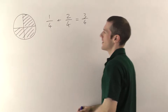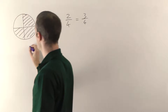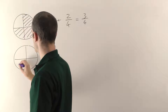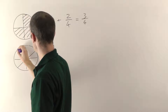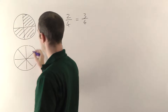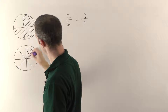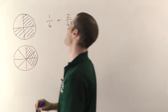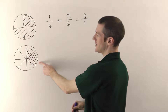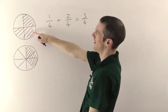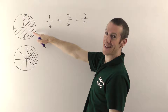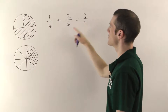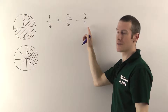If you have three eighths — if I do another pizza and split it into eighths and colour in three of those — you can see that is nowhere near three quarters. They're very different. So you can't just add the tops and add the bottoms. It doesn't work.